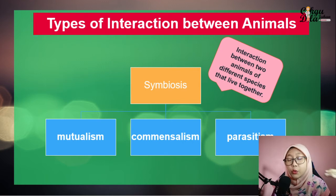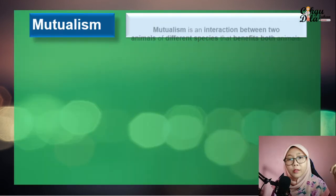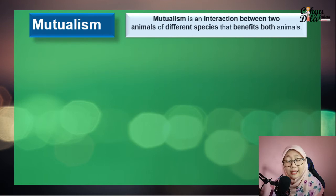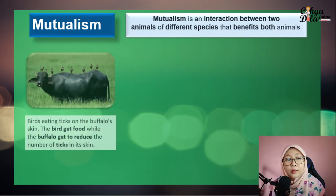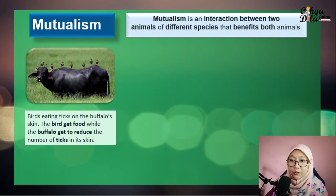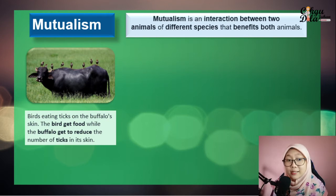The first type is mutualism — an interaction between two animals of different species that benefits both animals. For example, buffaloes and birds: birds eat ticks on the buffalo's skin. The birds get food, while the buffalo gets to reduce the number of ticks on its skin.